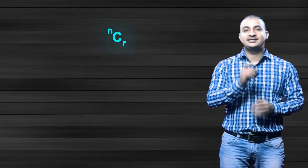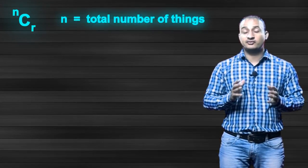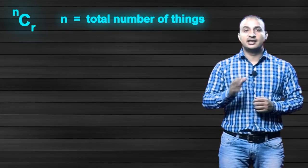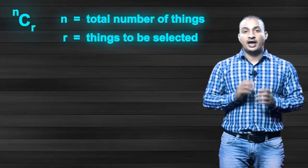First, I will tell you about the formula for combination, which is nCr. Here n is the total number of things, and r is the number of things to be selected. This is equal to n factorial upon r factorial times n minus r factorial.